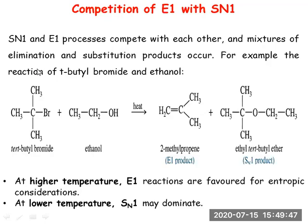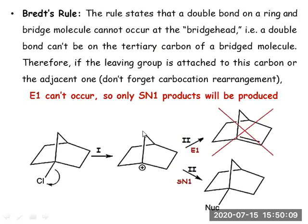SN1 and E1 also compete with each other. The expected products include an elimination product and a substitution product. If the reaction is carried out at elevated temperature, E1 is favored; at lower temperature, SN1 is favored.